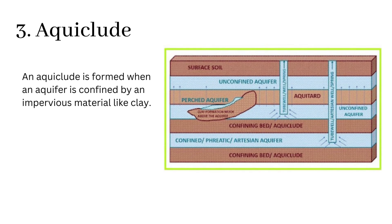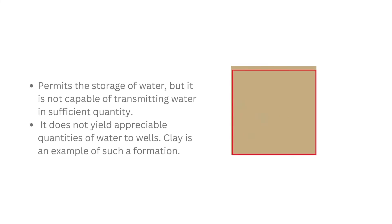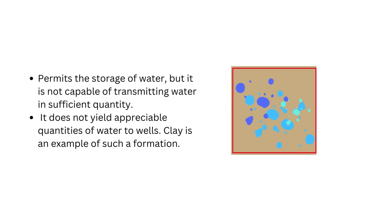An aquaclude is formed when an aquifer is confined by an impervious material like clay. Aquaclude is a geological formation of relatively impermeable material that permits the storage of water, but it is not capable of transmitting water in sufficient quantity. Hence, it does not yield appreciable quantities of water to wells. Clay is an example of such a formation.